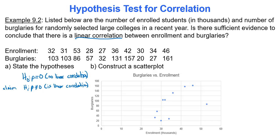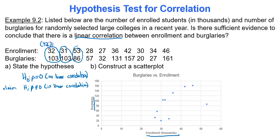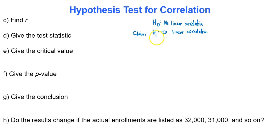The scatterplot plots enrollment along the x-axis and burglaries along the y-axis. Enrollments are in thousands, so a point at 32 on the x-axis and 103 on the y-axis represents 32,000 students and 103 burglaries, and so on for each pair. These can be represented as ordered pairs. To find the correlation coefficient, test statistic, and p-value, we use Google Sheets on the regression tab; we'll use a table to find the critical value.